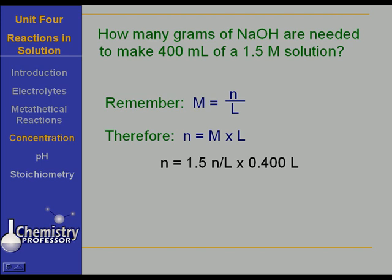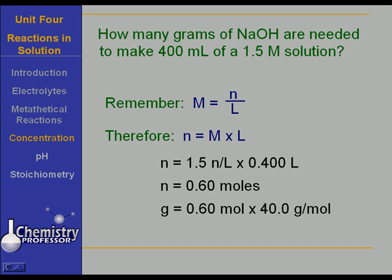We have 1.5 moles per liter times 0.4 liters. Our liters cancel, and that leaves us 0.6 moles. So we take 0.6 moles times 40 grams per mole and find that we have 24 grams of sodium hydroxide. We need to take 24 grams of sodium hydroxide, dissolve it in enough water to make 400 milliliters of solution, and we have a 1.5 molar solution.